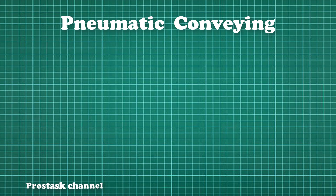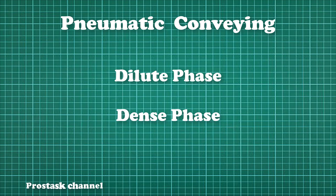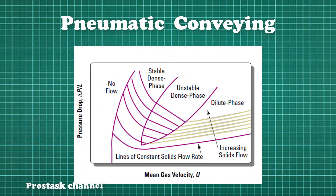Pneumatic conveying has two modes of conveying: 1. Dilute Phase and 2. Dense Phase. If the material is conveyed in suspension in the air through the pipeline, it is referred to as dilute phase conveying. If the material is conveyed at low velocity in a non-suspension mode through all or part of the pipeline, it is referred to as dense phase conveying.